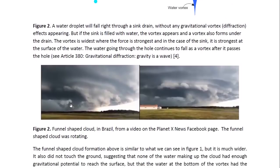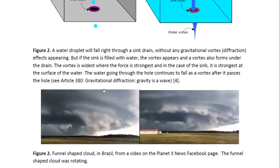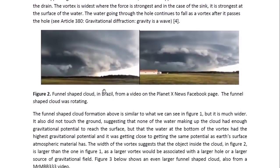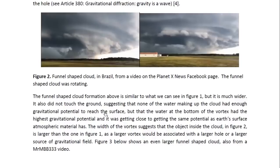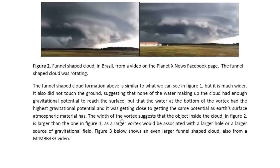This comes from a cloud that was observed in Brazil. It was rotating slowly. But as you can see, it's a funnel-shaped cloud as well — it's just a lot wider than the one we saw in figure one. The funnel-shaped cloud formation above is similar to what we saw in figure one but it is much wider. It also did not touch the ground, suggesting that none of the water making up the cloud had enough gravitational potential to reach the surface.